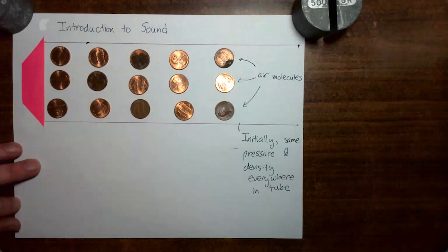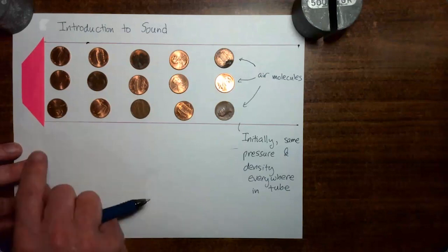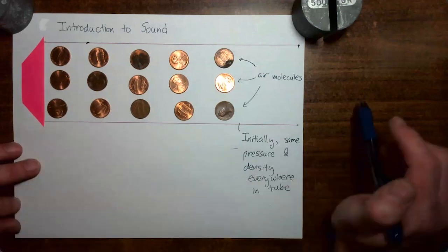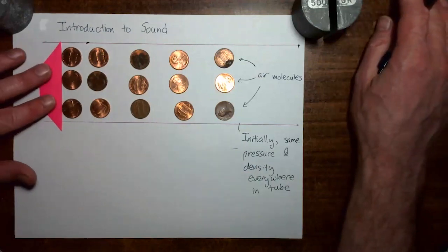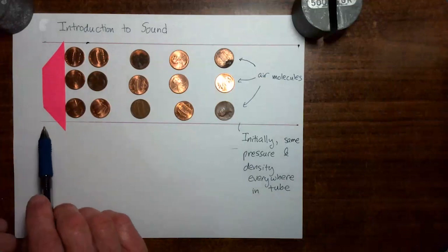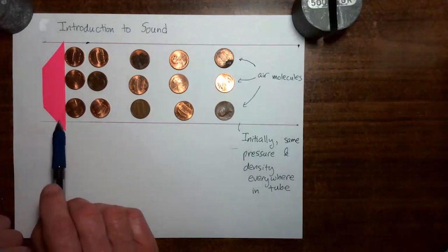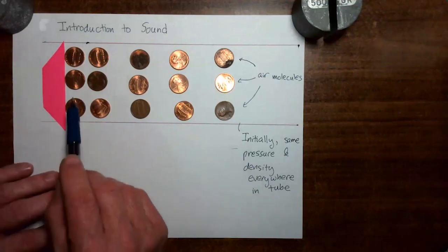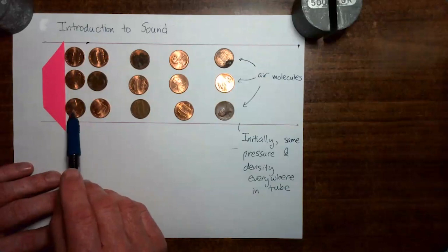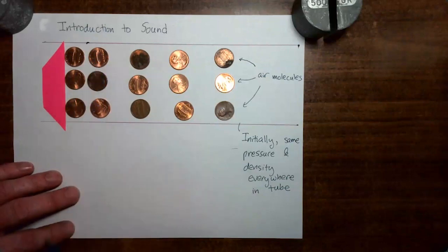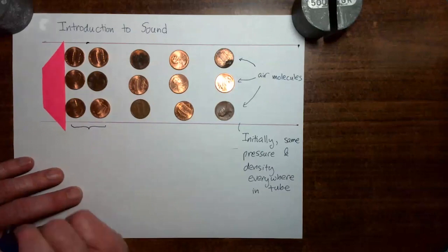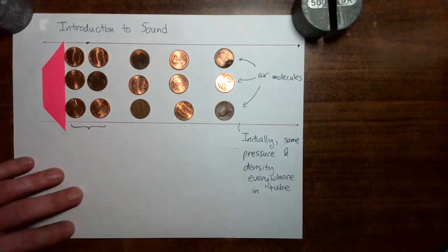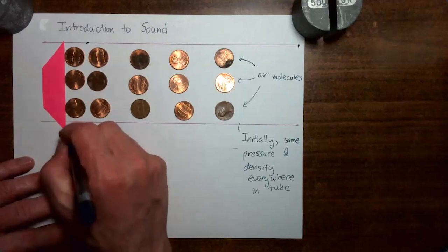So to get things started, I'm going to have the speaker move in towards that region where the air molecules are. Do you see that in that motion of the speaker, this group of air molecules got crammed into this group of air molecules, and we now have a region in the tube with higher density and higher pressure than the rest of the tube.